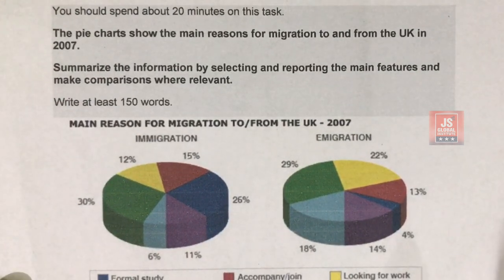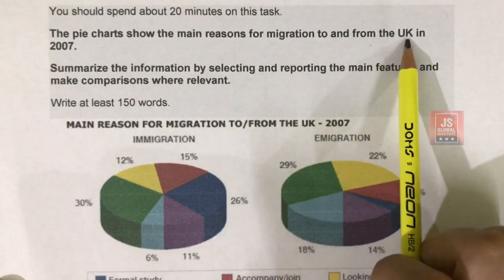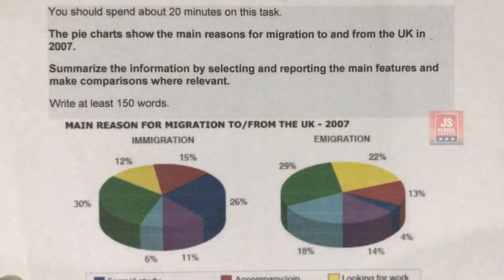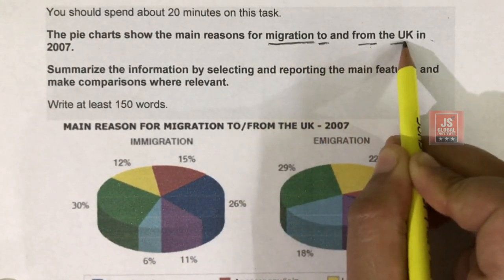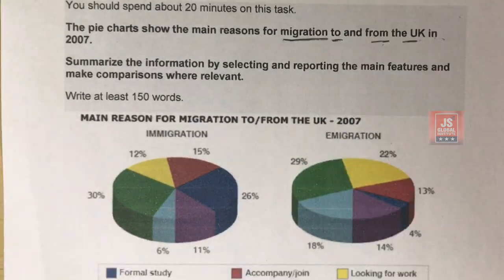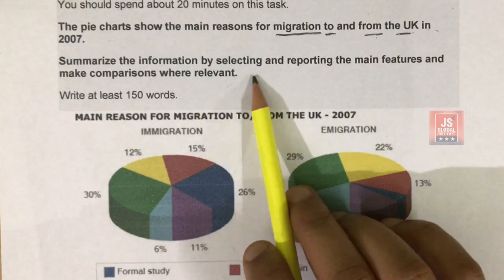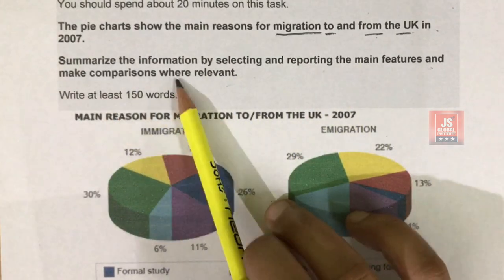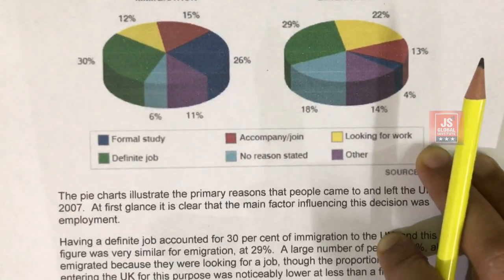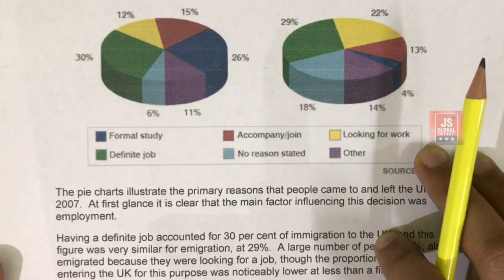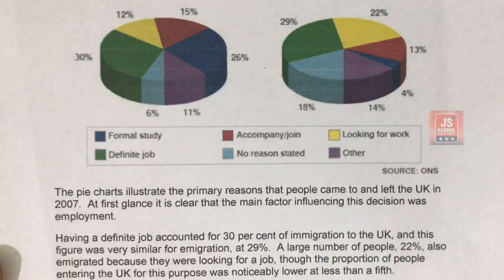First of all, let us have a look at the statement: 'The pie charts show the main reasons of migration to and from the UK in 2007.' Now here we are told about people going to the UK and people going abroad. The question says: summarize the information by selecting and reporting the main features and make comparisons where relevant. Write at least 150 words.